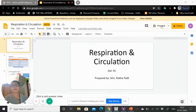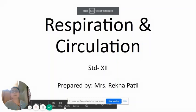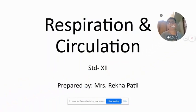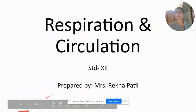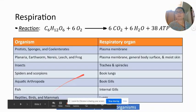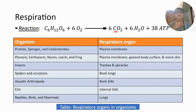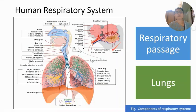In a previous video, I explained the definition of respiration. To recall your memory, I will repeat it once again. Respiration is a biochemical process of oxidation of organic food to liberate chemical energy. Here glucose is oxidized to liberate 38 ATP molecules of energy, and byproducts such as carbon dioxide and water vapors are formed.